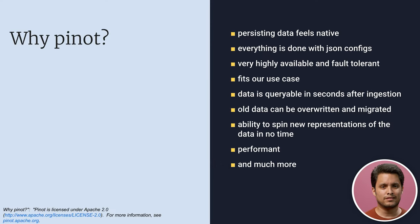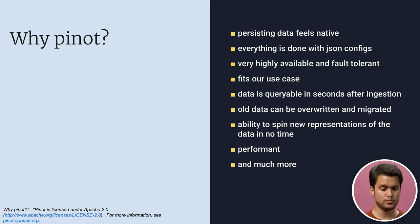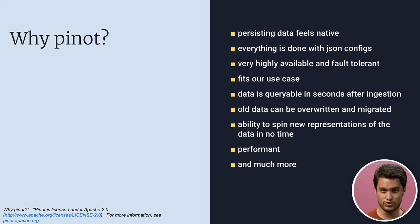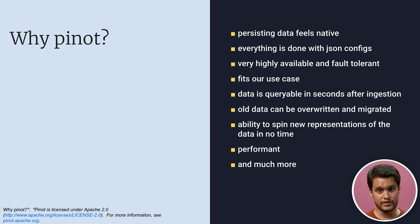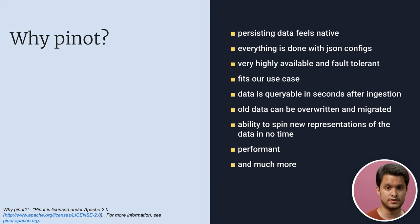Why Pinot? There are so many things we found with Pinot. Persisting data feels really native — with our previous iterations we had to roll new apps, code endpoints, build clients going from Kafka into MySQL, and deal with errors on HTTP calls. With Pinot, everything is done with JSON configs — it feels almost codeless. It is highly available and fault-tolerant. It fit our use case to perfection, especially the aggregation features. Data is queryable in seconds after ingestion as opposed to minutes or hours. All data can be written and migrated, especially using offline servers. You can spin up new representations of your data in no time, and it is very performant.